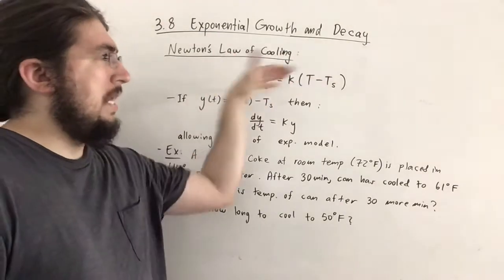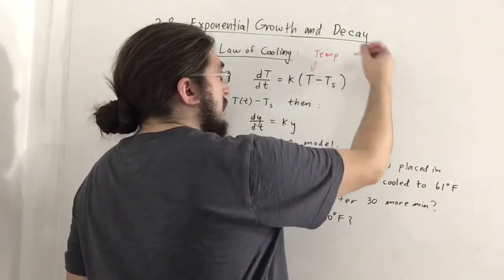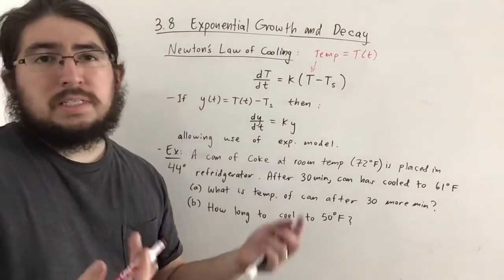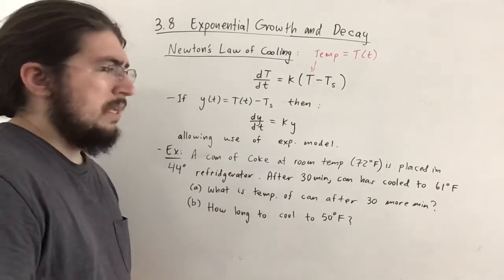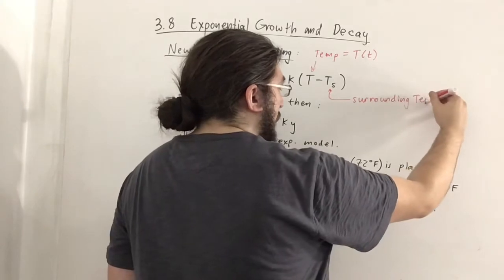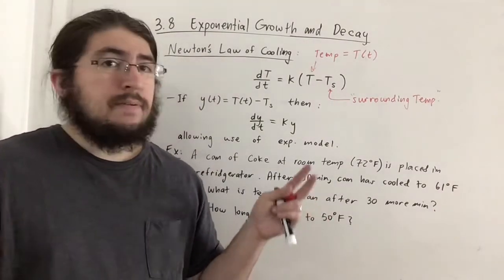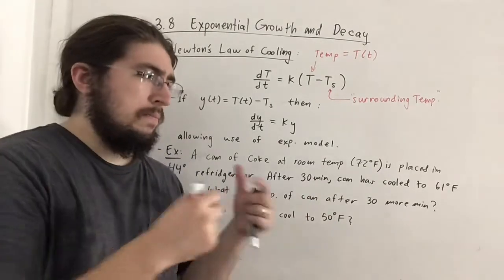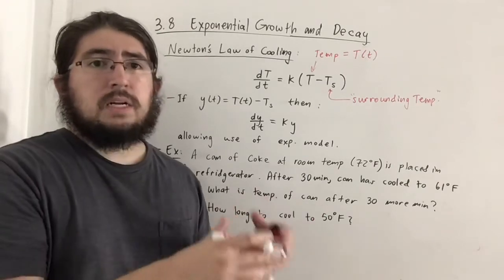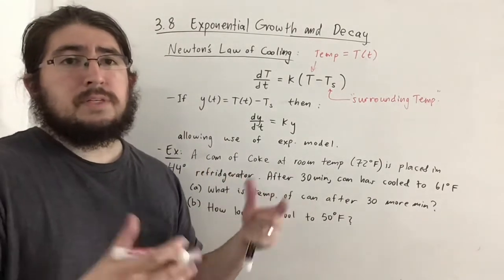To keep our terminology straight: T is temperature as a function of time t (in hours or minutes), and T_s is the surrounding temperature. If an object is placed in a room, after a certain amount of time it approaches the surrounding temperature — a turkey in an oven eventually reaches oven temperature; a Coke in a refrigerator can't get cooler than the refrigerator.